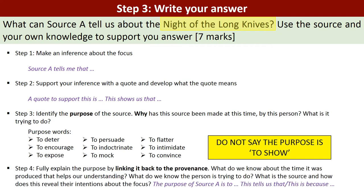Step four is to fully explain what the purpose is by linking it back to the provenance. If you said the purpose is to intimidate somebody, that's a good start — but why? Link it back to the provenance: the who, the what, the when. What do we know about the time it was produced? What do we know about the person who made it and what they want? Use the sentence starter: 'The purpose of Source A is to [purpose word]... This is because...' and that's where you link it back to the provenance to fully explain why it was made at that specific time.